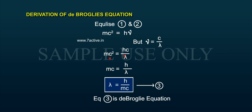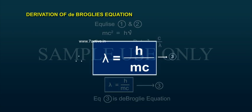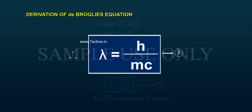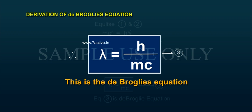mc is equal to h by lambda. Therefore, lambda is equal to h by mc, Equation 3. This is de Broglie's Equation.